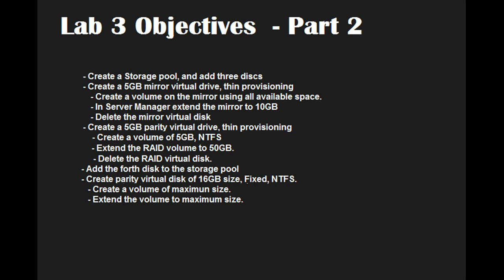For Lab 3 Objective 2, we will be creating a storage pool, adding 3 disks to it, and creating a 5GB mirror virtual drive with thin provisioning. We will create a volume on the mirror using all available space. In Server Manager, we will extend the volume of the mirror to 10GB, then delete the mirror virtual disk. Next, we will create a 5GB parity virtual drive with thin provisioning, create a volume of 5GB with NTFS format, extend the volume to 50GB, and delete that RAID virtual disk. Then we will add the 4th disk to the storage pool, create a virtual parity disk of 16GB with NTFS format and fixed provisioning, create a volume using the maximum size, and extend the volume to the maximum size.